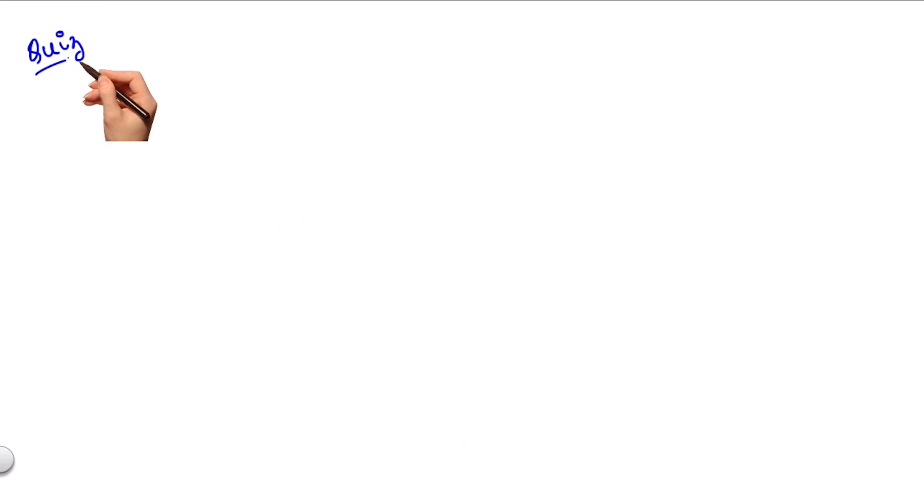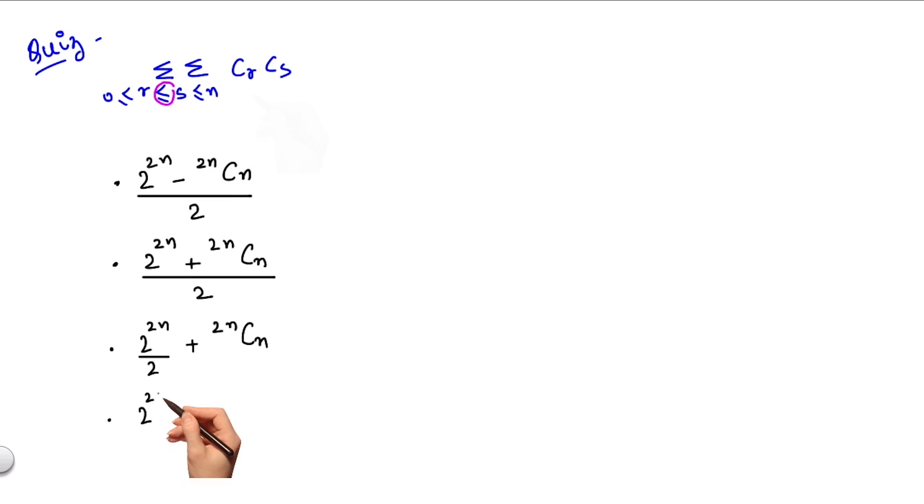So let's have a quiz based on this to test your understanding. What is the value of double summation CR CS where R is greater than or equal to 0, less than or equal to S, S less than or equal to n. Please note the less than or equal to sign here. Your options are the following.